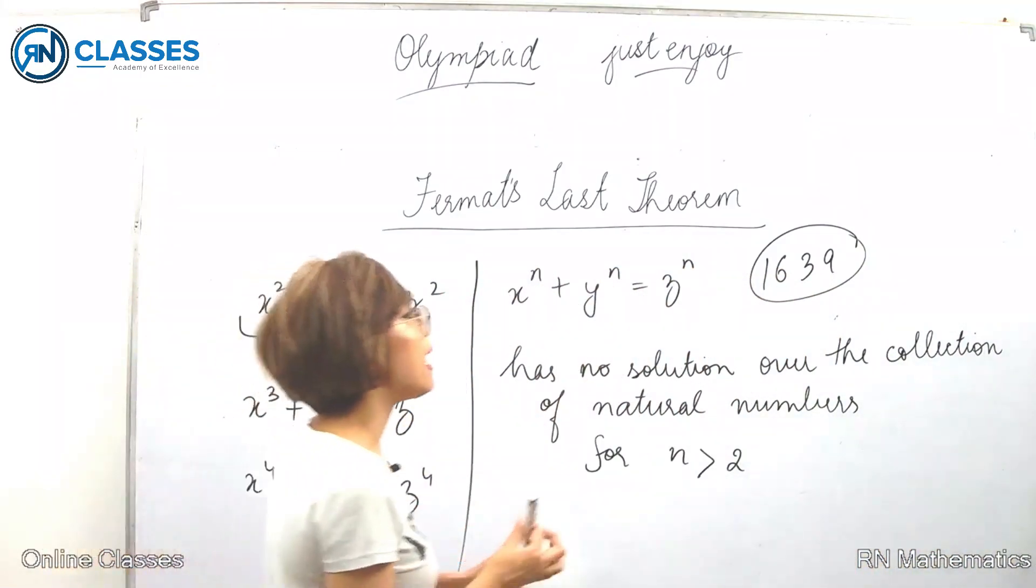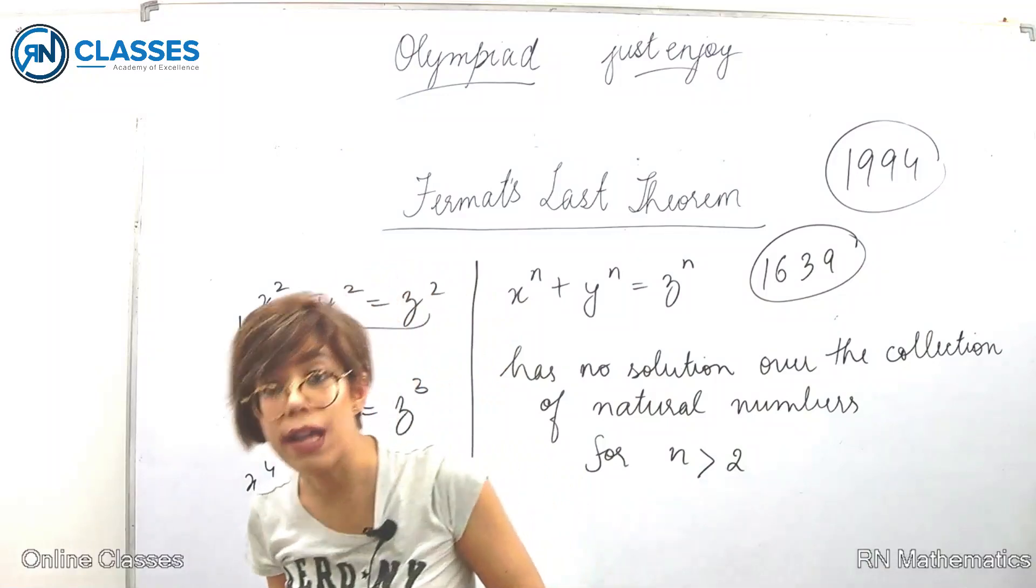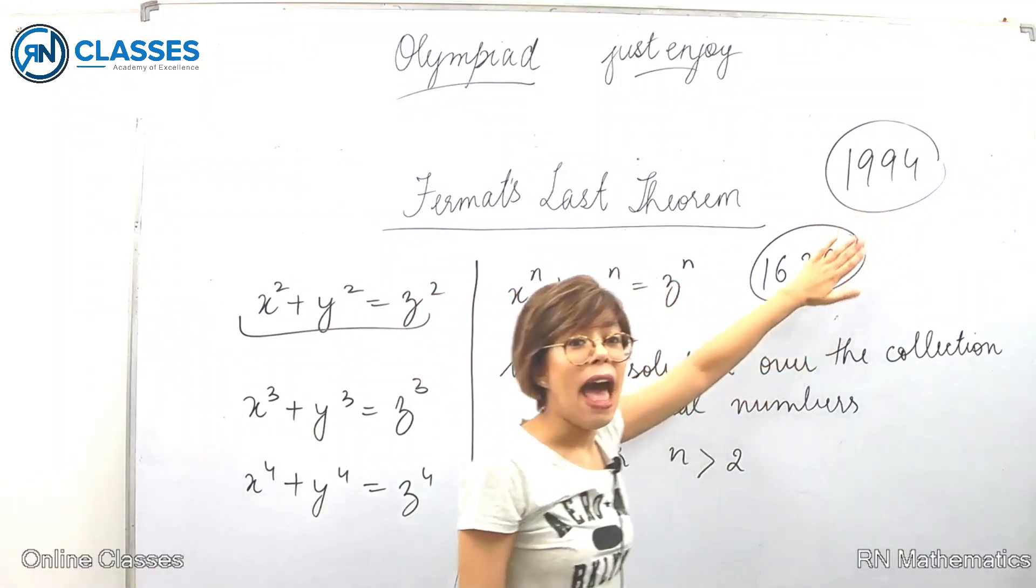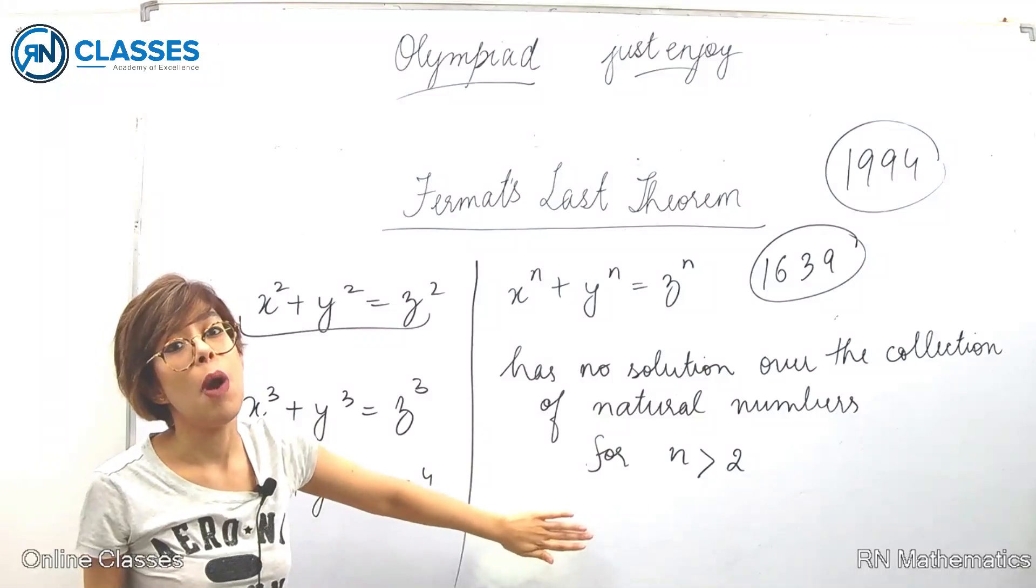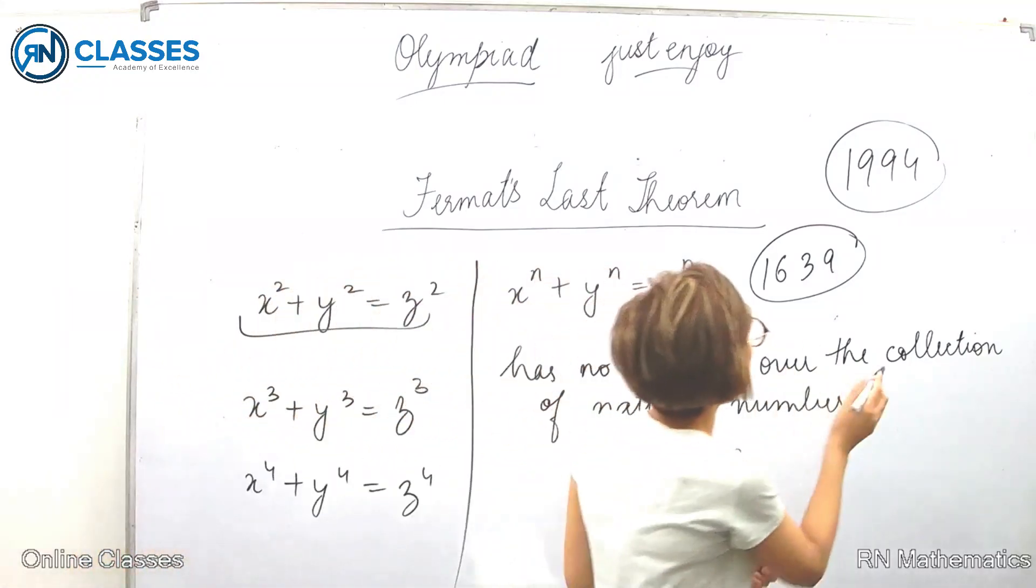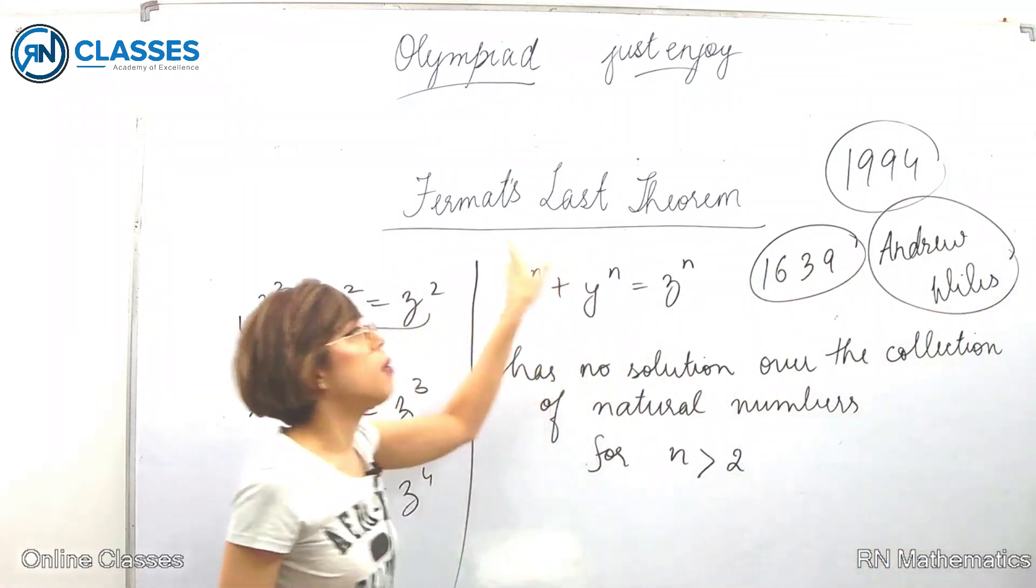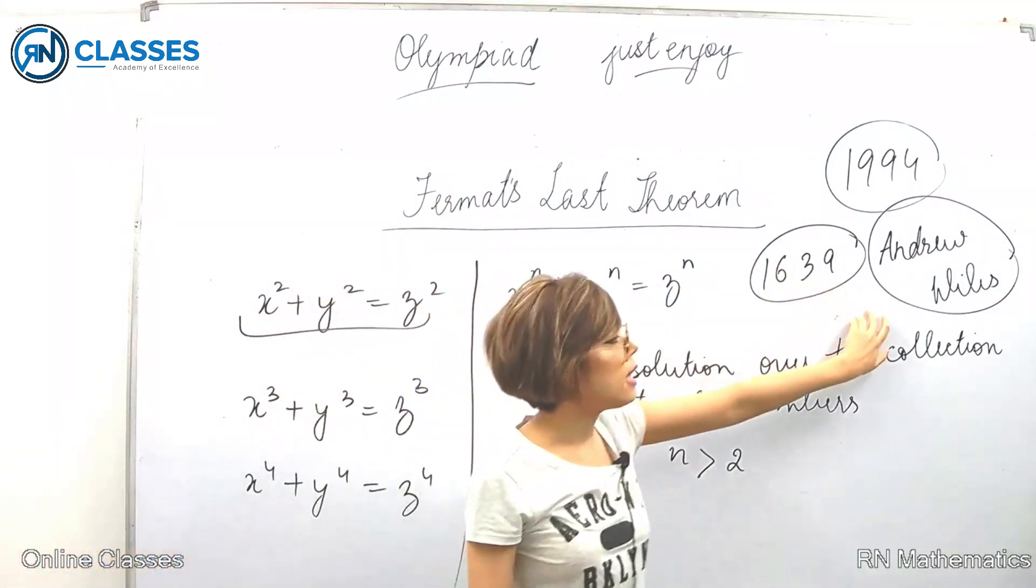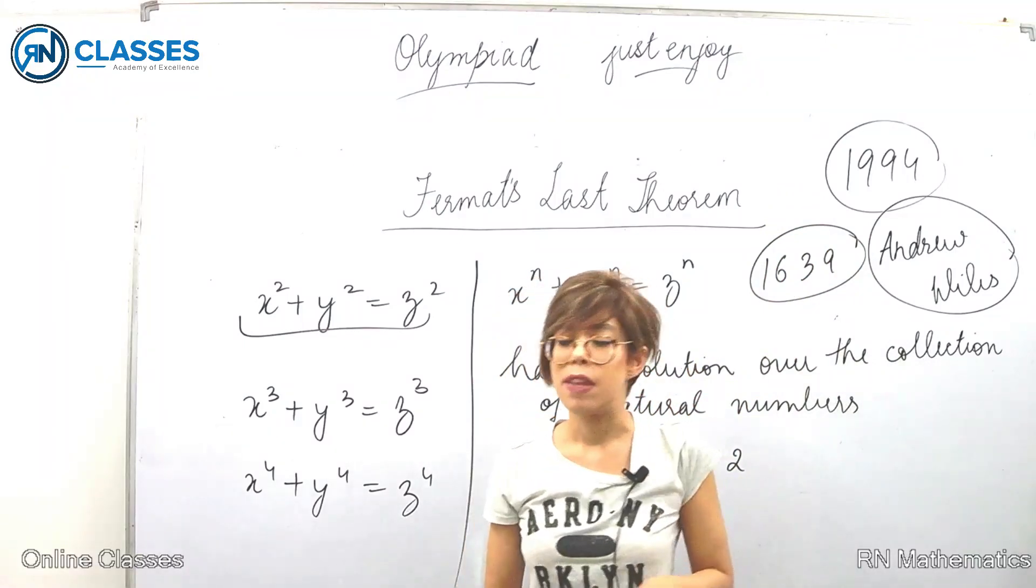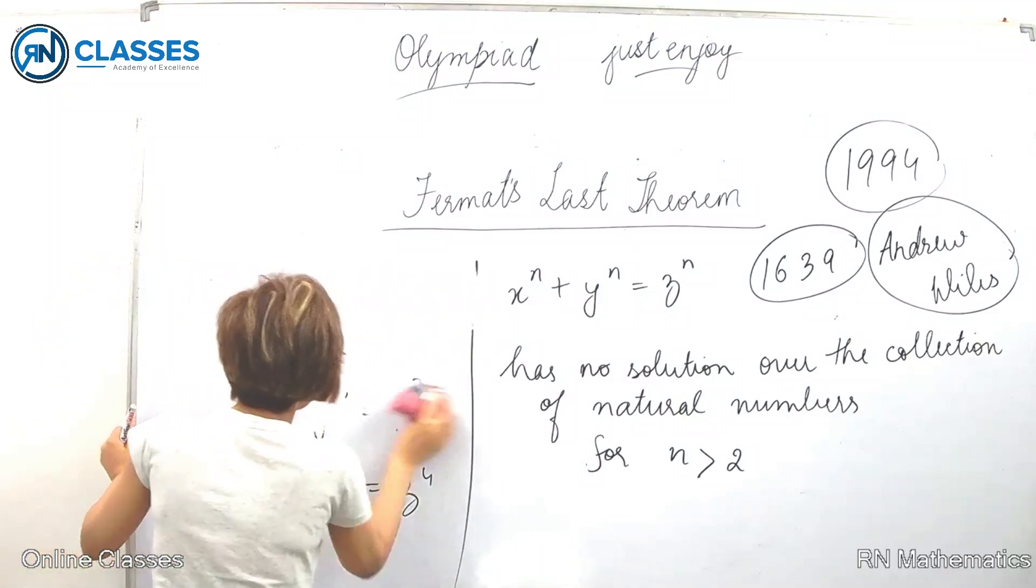This result was written in 1639. Many mathematicians tried to prove it but were unable. Finally, in 1994, a mathematician named Andrew Wiles was able to prove this. From 1639 to 1994, and then finally the proof of this theorem was formally written down.